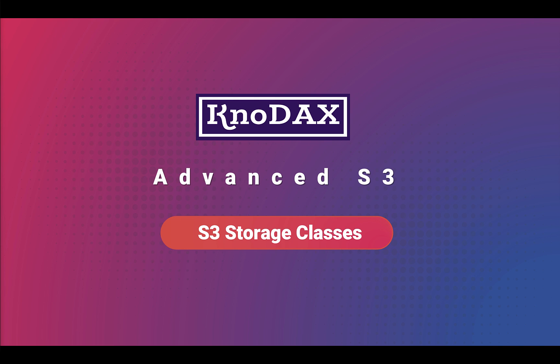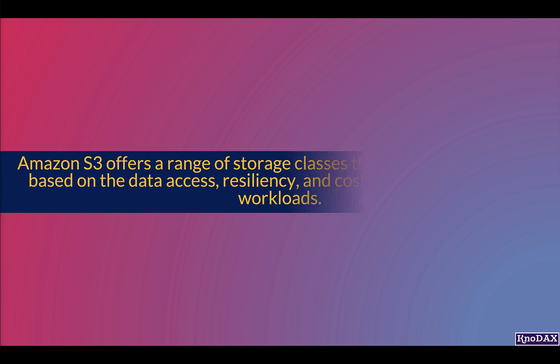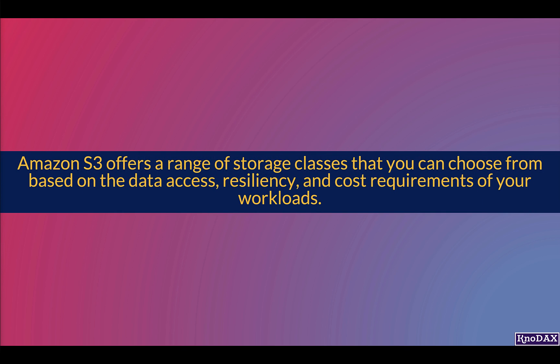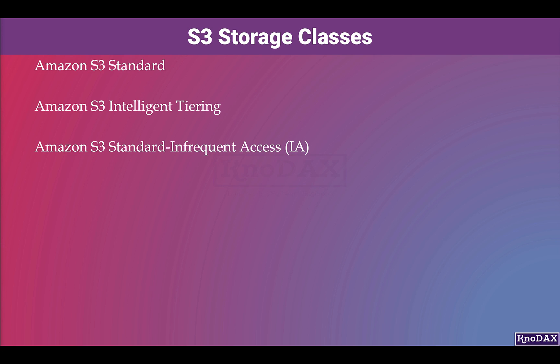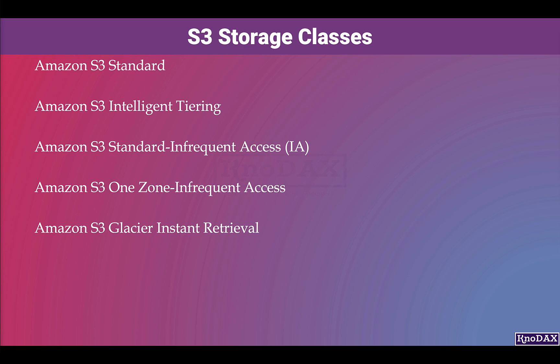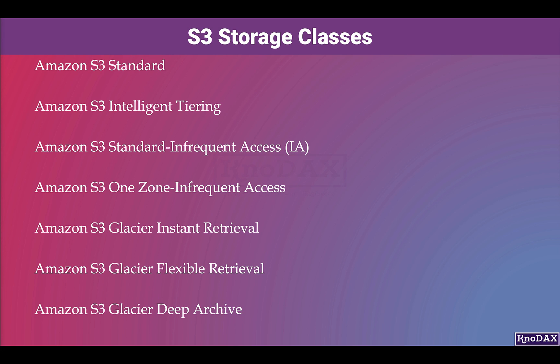Amazon S3 offers a range of storage classes that you can choose from based on the data access, resiliency, and cost requirements of your workloads. These storage classes are Amazon S3 Standard, Amazon S3 Intelligent Tiering, Amazon S3 Standard Infrequent Access, Amazon S3 One Zone Infrequent Access, Amazon S3 Glacier Instant Retrieval, Amazon S3 Glacier Flexible Retrieval, and Amazon S3 Glacier Deep Archive.